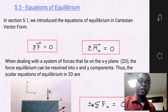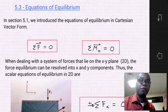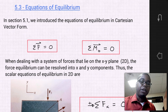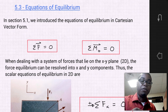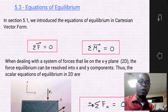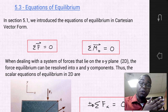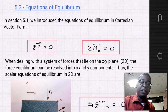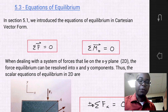The first equation is that the resultant force, which is equal to the sum of the forces, is equal to zero. The second equation is that the resultant moment, which is equal to the sum of the moments, is equal to zero. When dealing with a system of forces that lie on the x and y plane, meaning 2D problems, the force equilibrium can be resolved into x and y components.